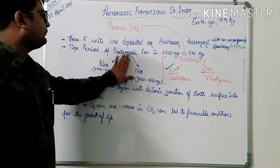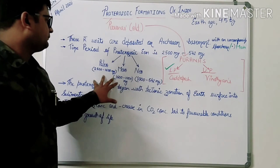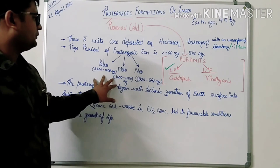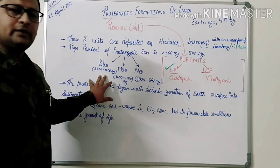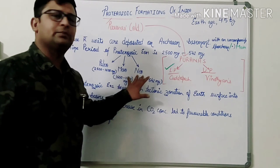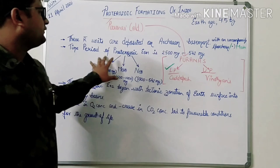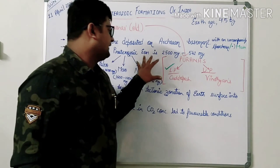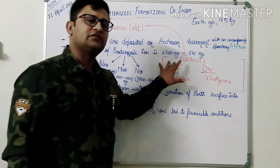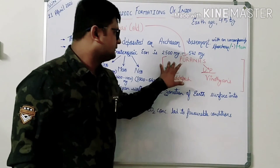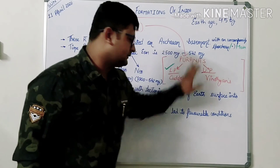The period of Proterozoic is divided into three major portions: Paleo-Proterozoic, Meso-Proterozoic, and Neo-Proterozoic. The age of the Proterozoic eon is 2500 million years to 542 million years.